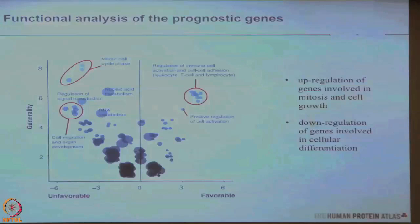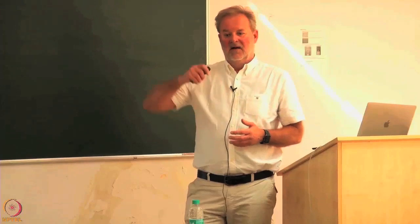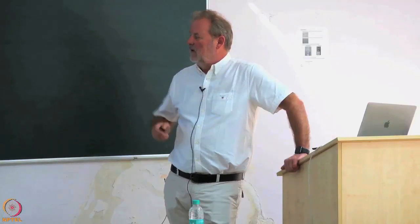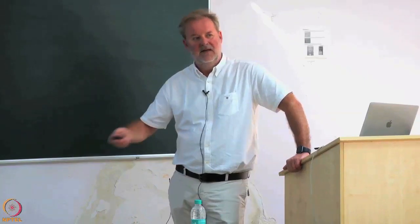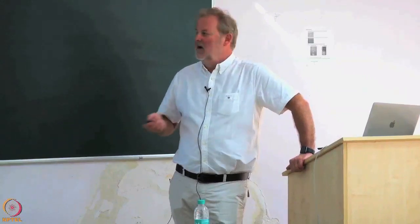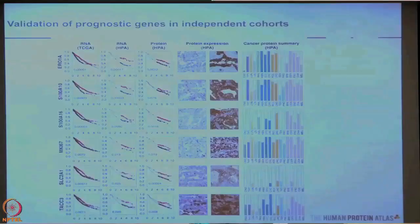Looking at the function of these genes: the unfavorable genes encode proteins involved in cell cycle regulation, cell cycle progression, and cell growth — very logical that this would correlate to poor prognosis. The favorable genes, where high expression correlates to good prognosis, encode proteins involved in cellular differentiation and immune response. This was quite expected from the pathology point of view, but had never before been shown on a global transcriptomic view of all our genes.